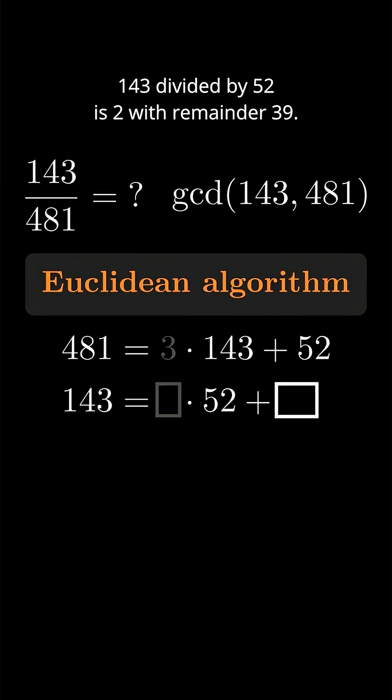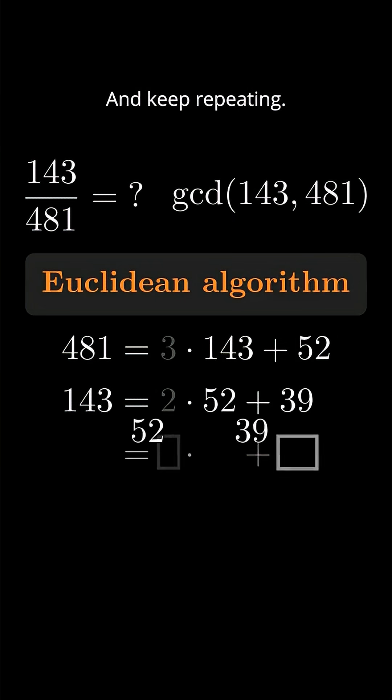Divide again. 143 divided by 52 is 2 with remainder 39. And keep repeating.